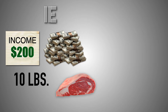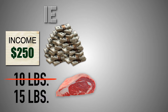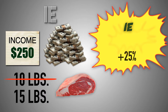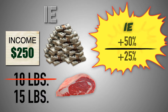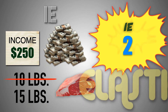Let's practice. Suppose that a consumer's disposable income increases from $200 to $250, and their demand for beef, a normal good, increases from 10 pounds to 15 pounds. When the consumer's disposable income jumped by 25%, the consumer increased their consumption of beef by 50%. This gives us an income elasticity coefficient of 2, which means that the consumer's demand for beef, a normal good, is income elastic.